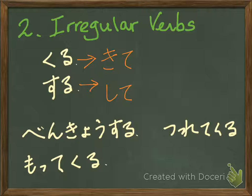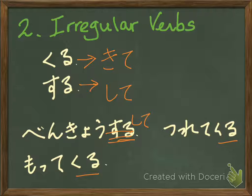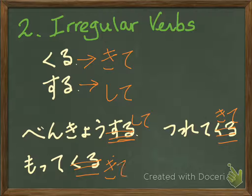There are some compound verbs like benkyou suru, tsurete kuru, and motte kuru. Those verbs end in suru and kuru, so they have the same conjugation pattern. Benkyou suru → benkyou shite. Tsurete kuru → tsurete kite. Motte kuru → motte kite. This is the te-form.